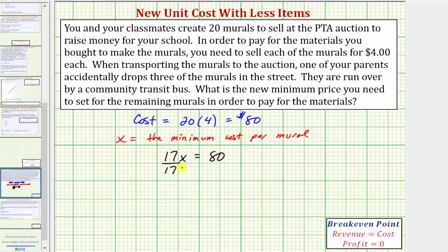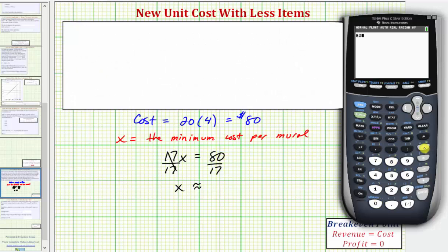So we divide both sides by 17 in order to solve for x. If x is going to be equal to this quotient, we'll have to approximate to the nearest cent. So using the calculator, we would have 80 divided by 17, to the nearest cent or two decimal places, would be 4.71.